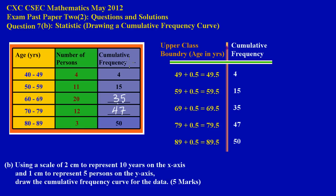For part B it states here that using a scale of 2 centimeters to represent 10 years on the x-axis and 1 centimeter to represent 5 persons on the y-axis, draw the cumulative frequency curve for the data. That's an easy five marks. Now last year when I was looking at question 7, we had a similar question.